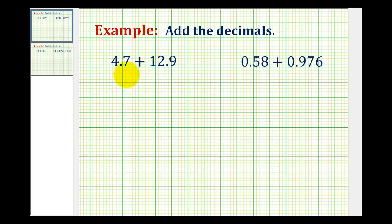We want to add the following numbers in decimal notation. To do this we want to rewrite the problems vertically and line up the corresponding place values. So we'll rewrite this as 4.7 plus 12.9.